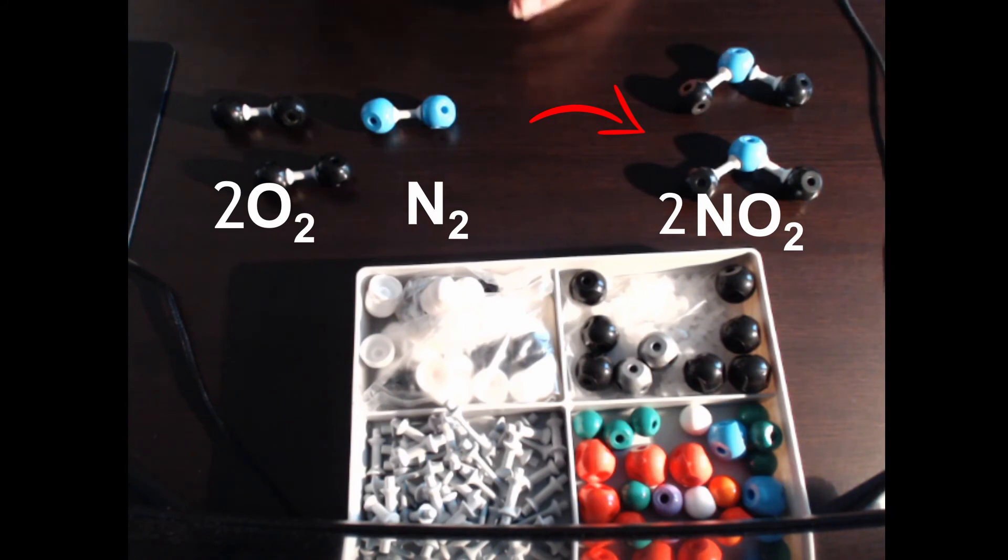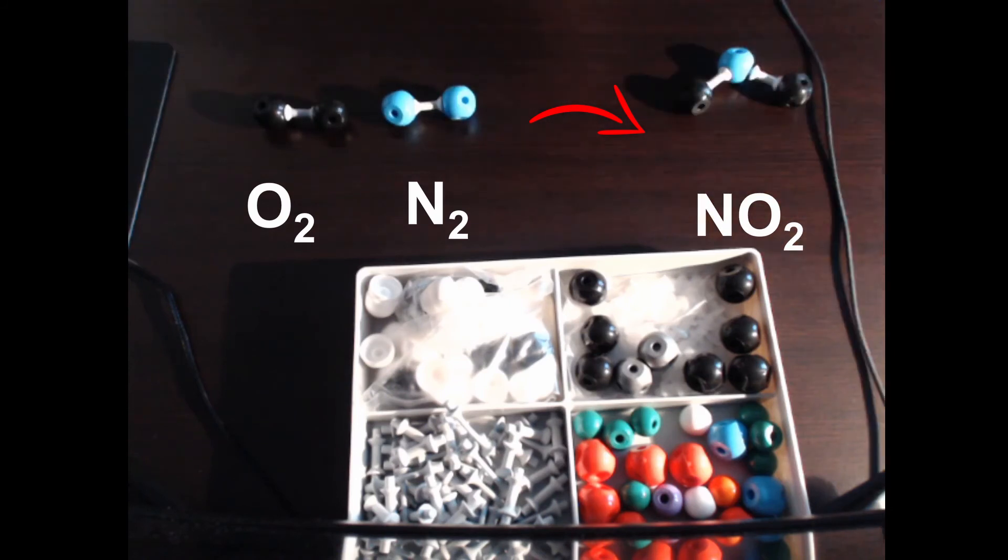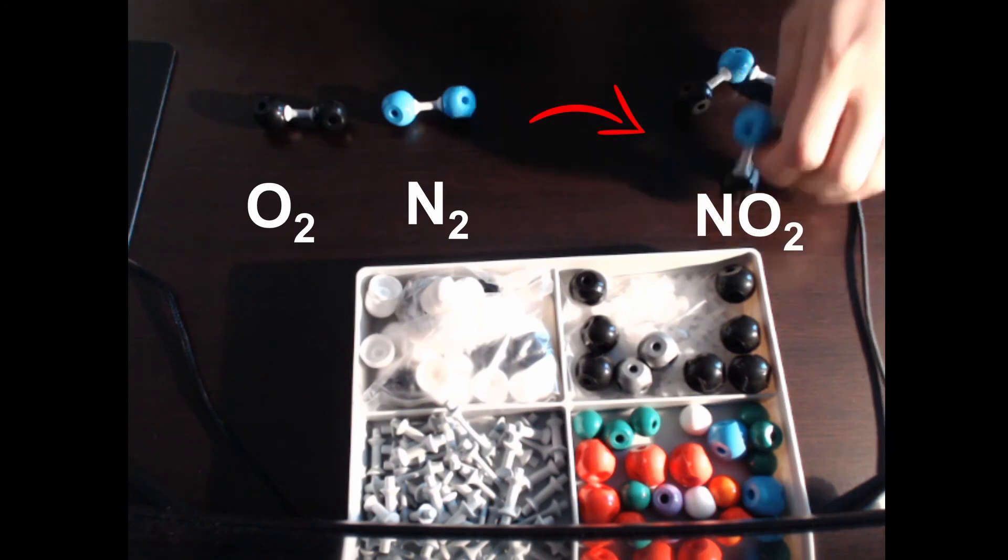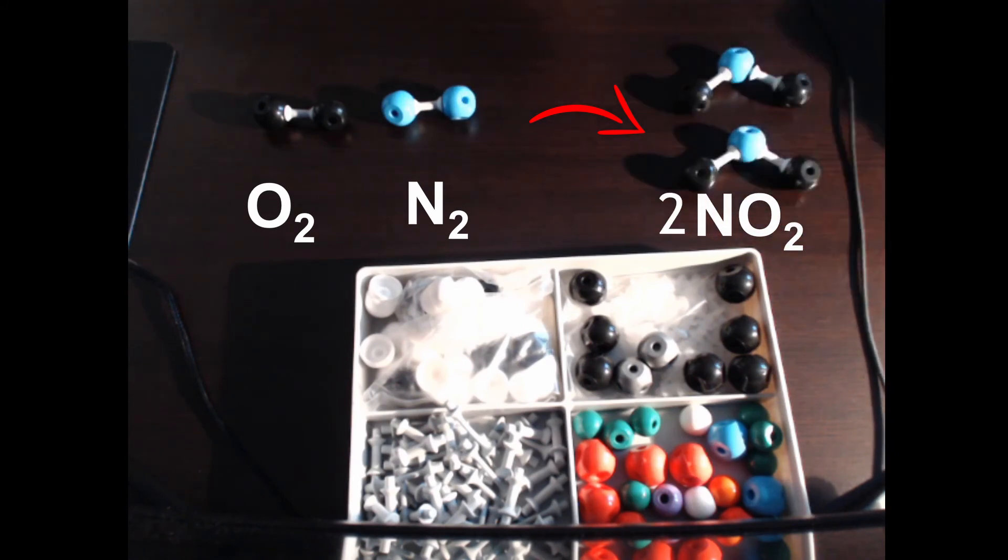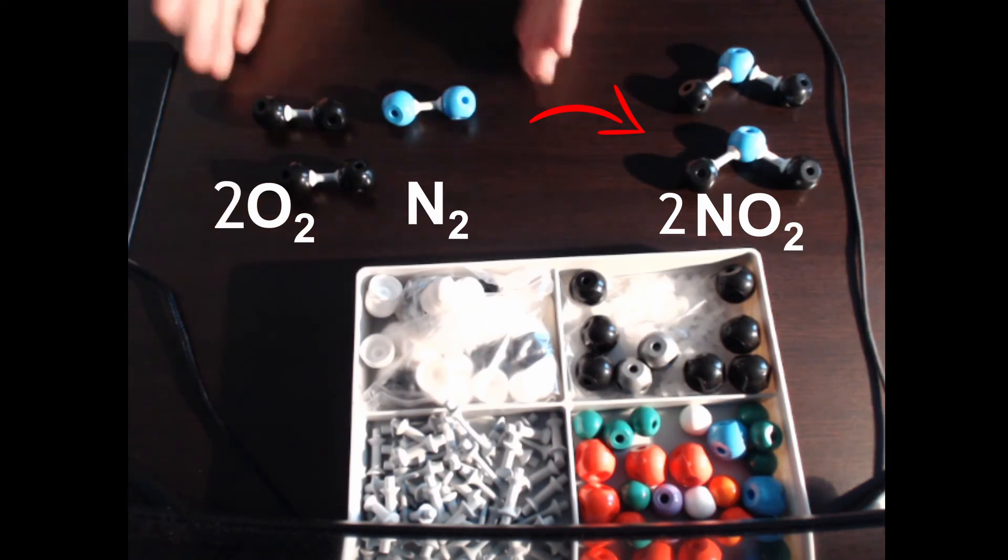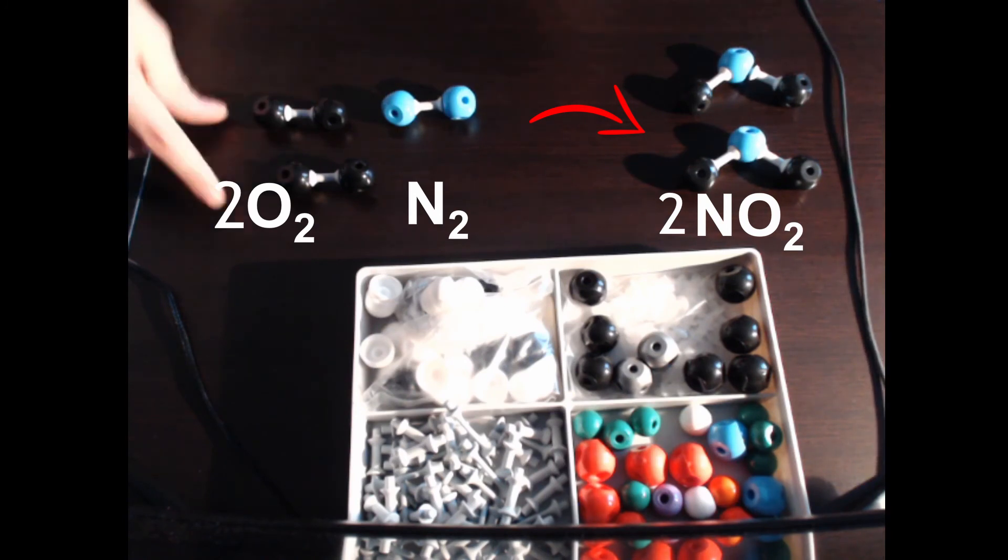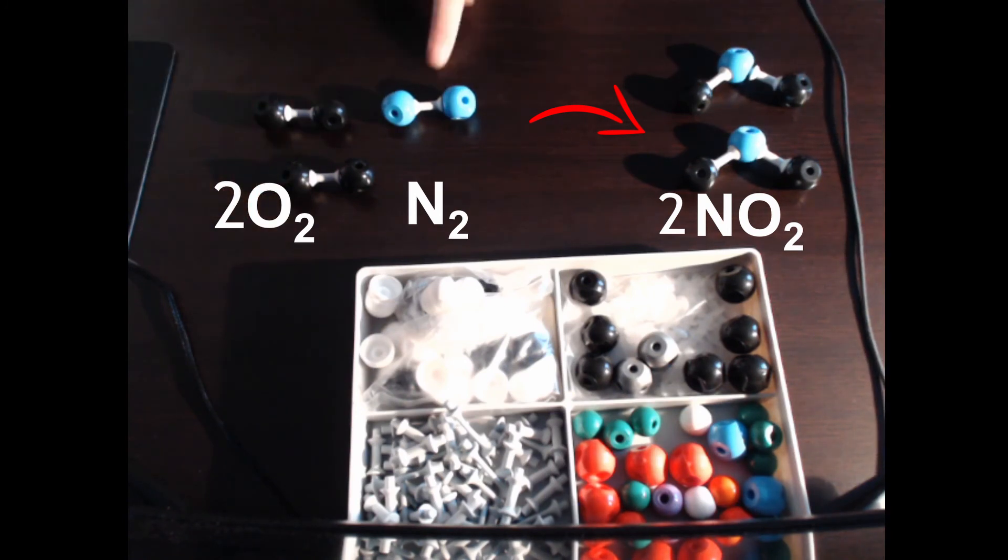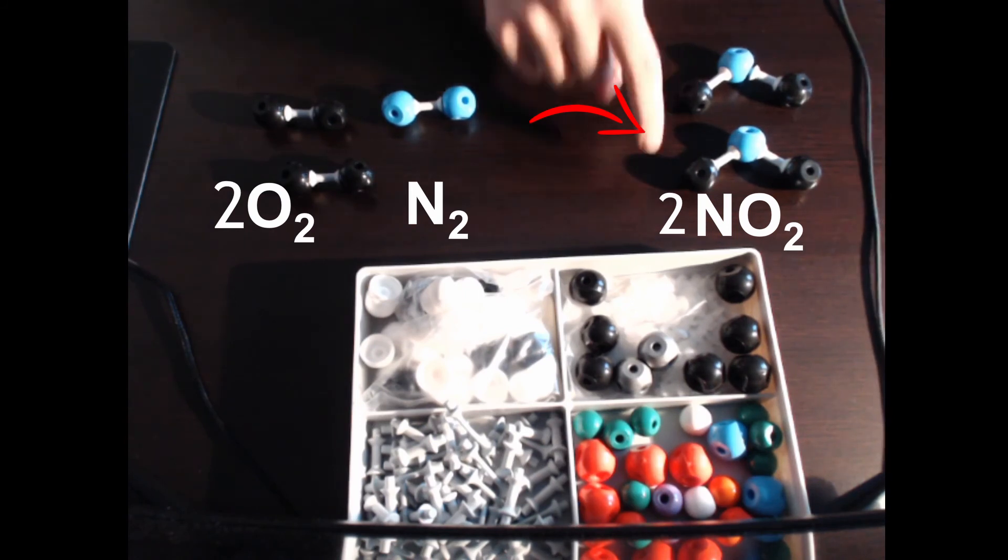And so this is how balancing chemical equations works. Instead, we had previously said that this was the reaction that existed. We had said when we wrote our skeleton equation that this was the reaction. Clearly this doesn't work because it breaks one of the fundamental laws of nature, which is the law of conservation of matter, which means that everything that we start with needs to be conserved until the end of whatever reaction is happening. So we can now see that this is what actually needs to happen. We need two O2s and one N2 to eventually produce two nitrogen dioxides.